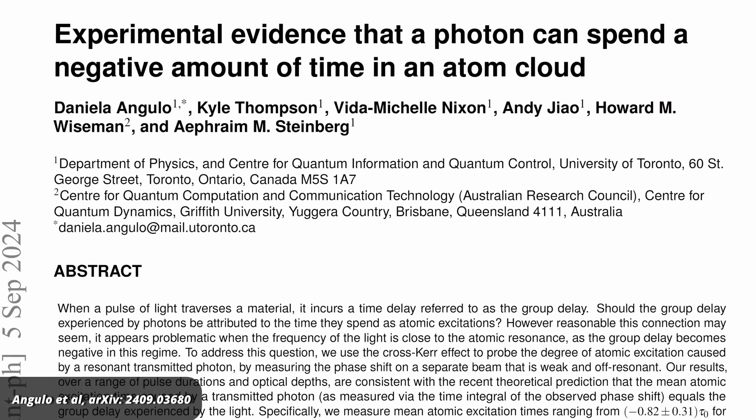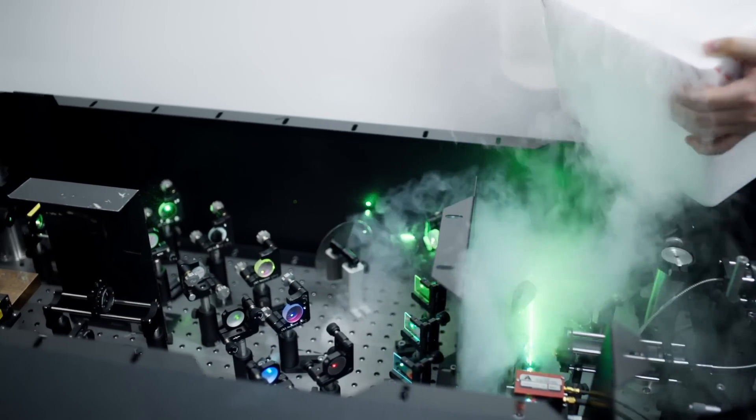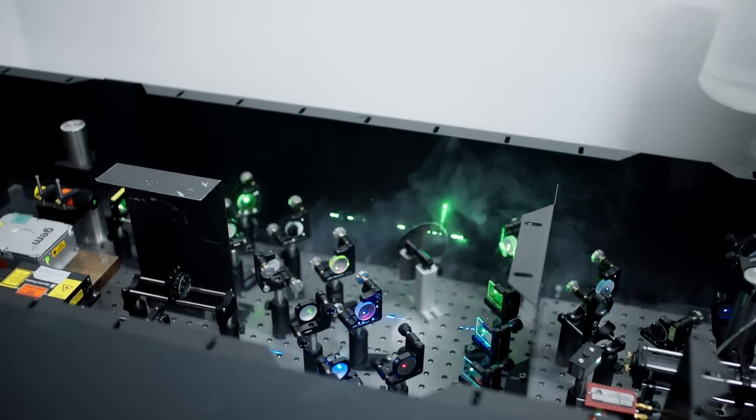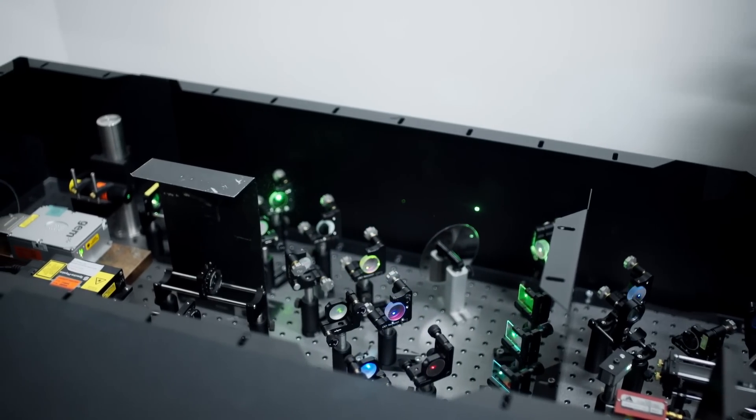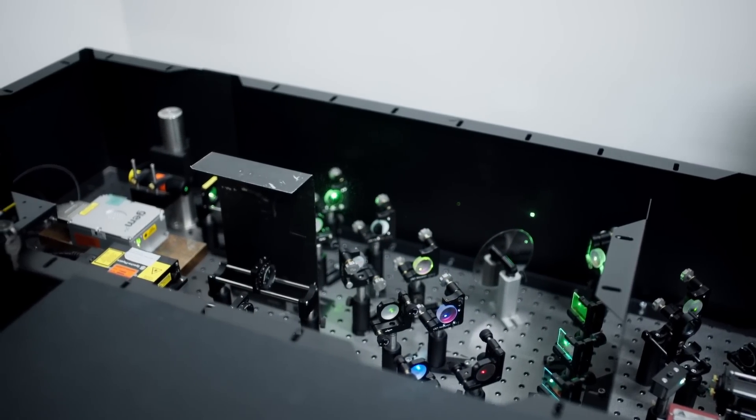The paper comes from Ephraim Steinberg's group in Toronto. They measured photons, the quanta of light, as they pass through a medium. To understand the business with the negative time, we first have to talk about what a photon is.